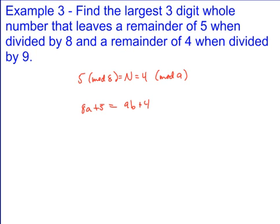So I do what I've been doing, which would give you 8a plus 5 equals 9b plus 4. Take both sides mod 8 and I'm going to get 5 as equivalent to b plus 4 mod 8. Once I subtract 1, I get b as equivalent to 1 mod 8.